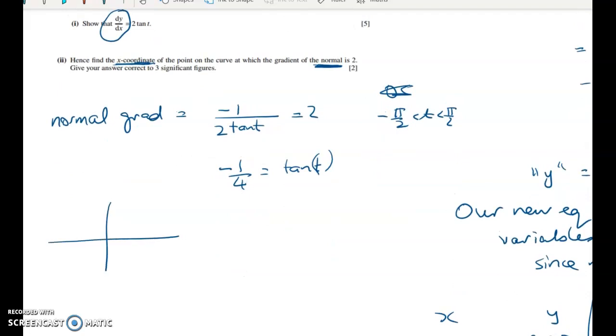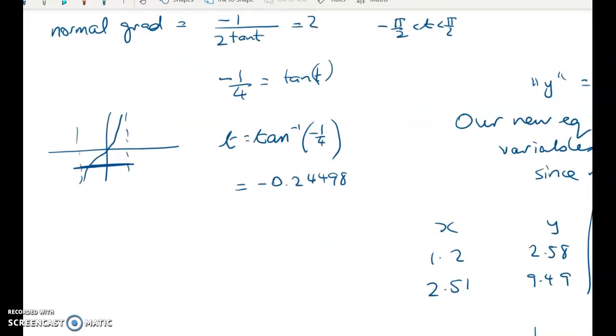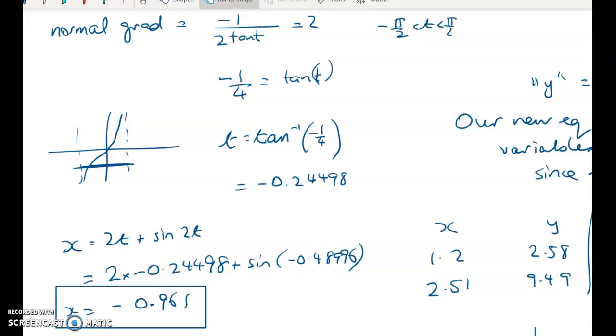Right, so let's just sketch it and see what we've got. We're just working with that bit of the curve, so that means we're just looking for this one value of t. So t is equal to tan inverse of negative 1 quarter, which gives me negative 2.24498. Now, a few of you stopped there, which was unfortunate, because we needed to find the x-coordinate, and x is equal to 2t plus sine of 2t, so x is equal to 2 times this plus sine of, what was it, negative 0.48996, and that gave me negative 0.961.